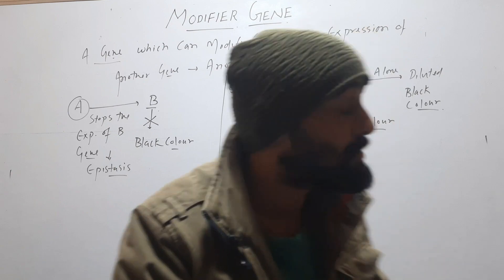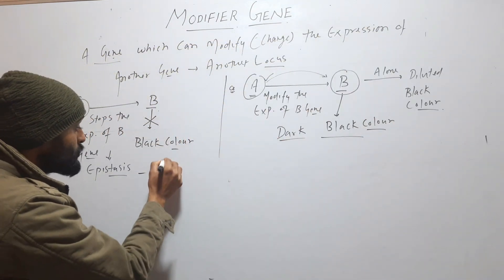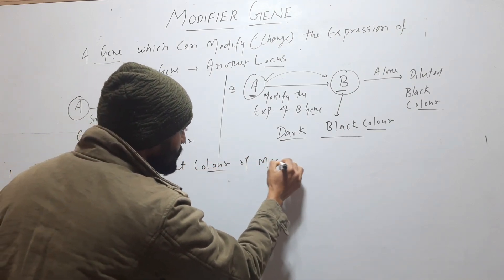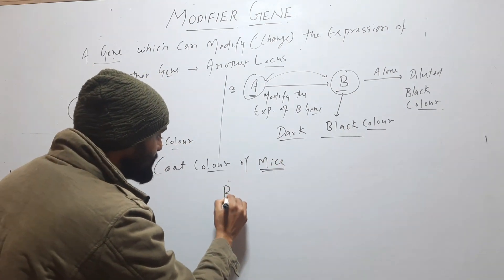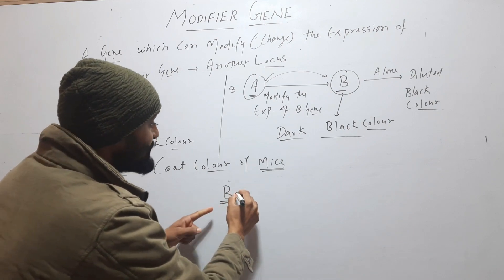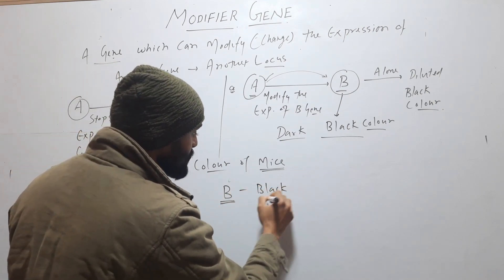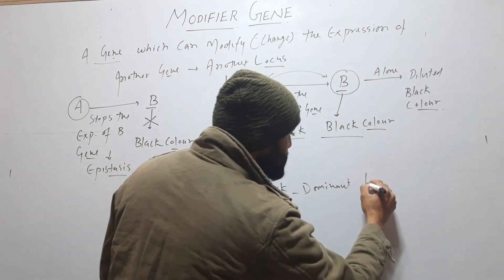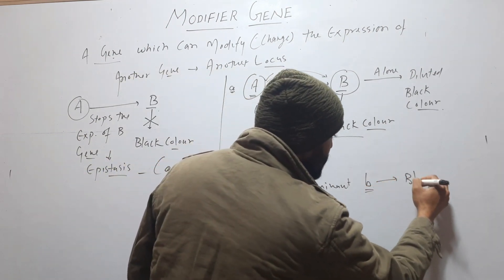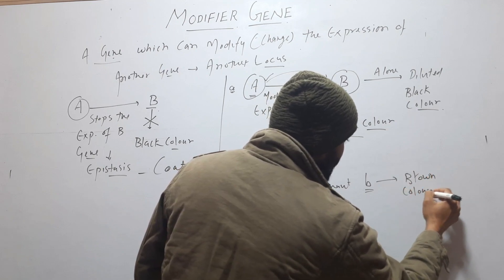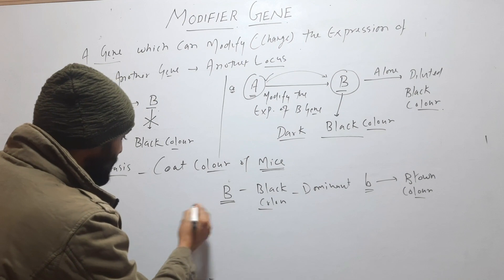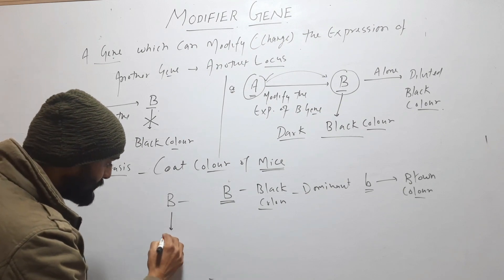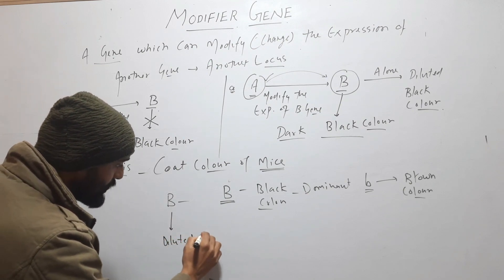These modifier genes are found in the case of coat color of mice. Coat color of mice is controlled by the B gene. The dominant B gene causes black color, and its recessive form, small b, causes brown color. When the B gene is alone, it produces diluted black color.